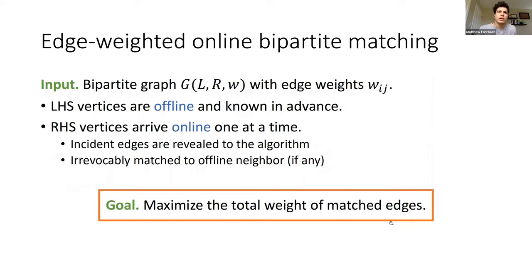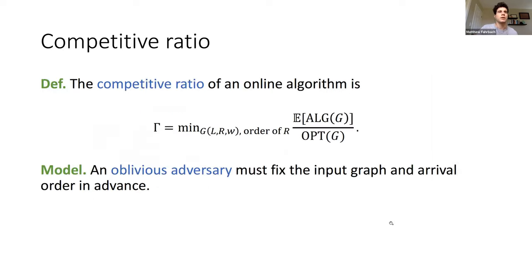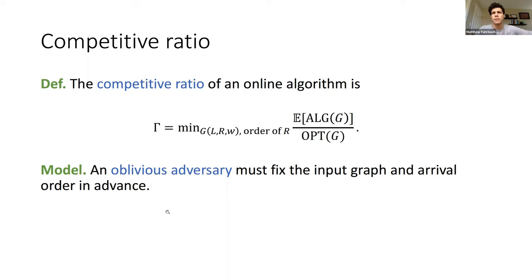For the edge-weighted bipartite matching problem, the goal is to maximize the total weight of matched edges. We define the competitive ratio of a randomized algorithm as the minimum over all instances and all orderings of the online vertices of the expected output of the algorithm divided by the offline optimum value. We work in the oblivious adversary model, where the adversary fixes the input ahead of time and cannot change it based on the algorithm's random decisions.